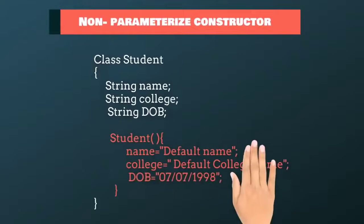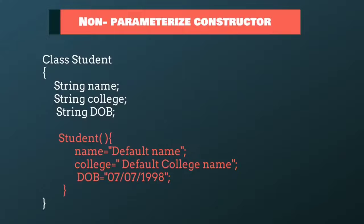Second is a non-parameterized constructor. As the name suggests, this type of constructor doesn't accept any parameter. It is used if we want to set the default values or to print something at the time of object creation.